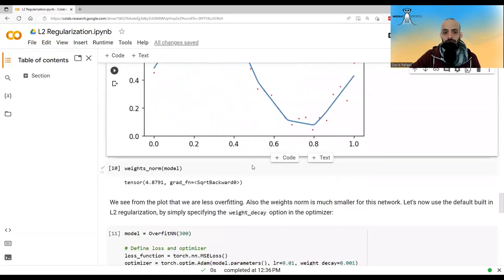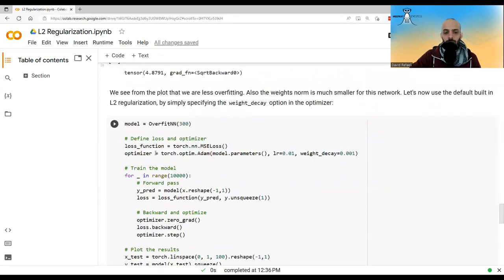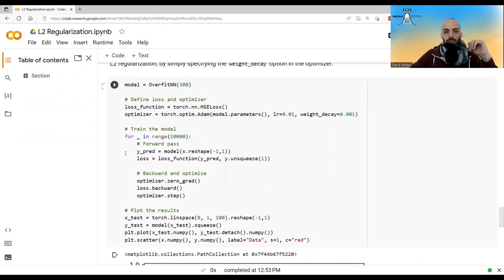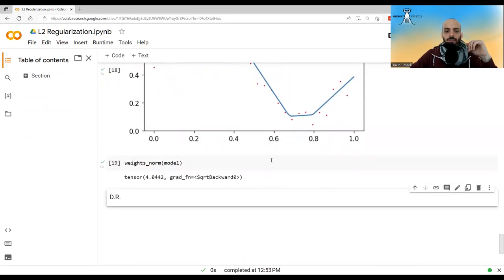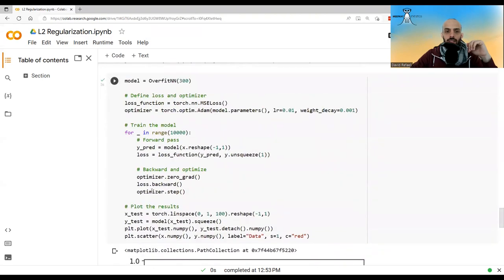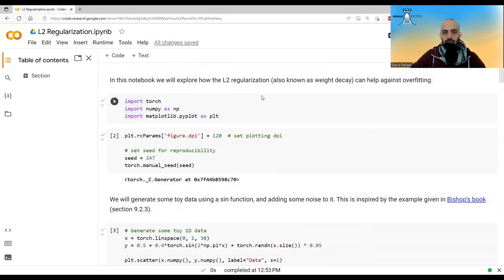but you don't have to do this. What you can do instead is when you instantiate the optimizer, you tell it use the weight_decay option. So then we just train regularly. And this is the result we get. This is the weights norm in this case. We can see it's much lower than the weights here.